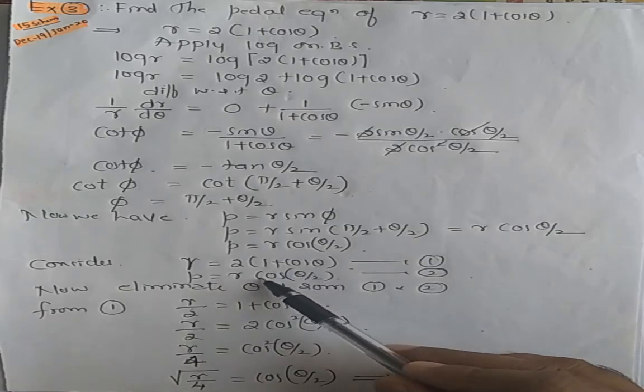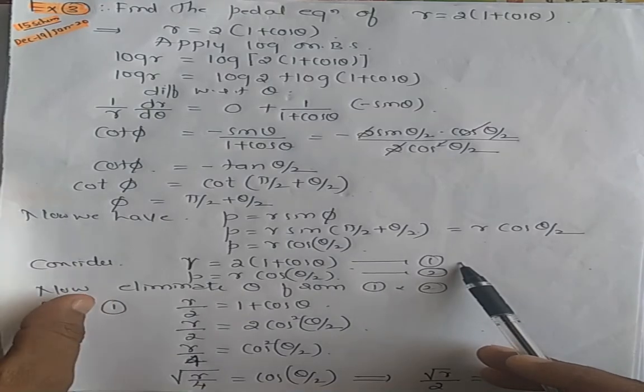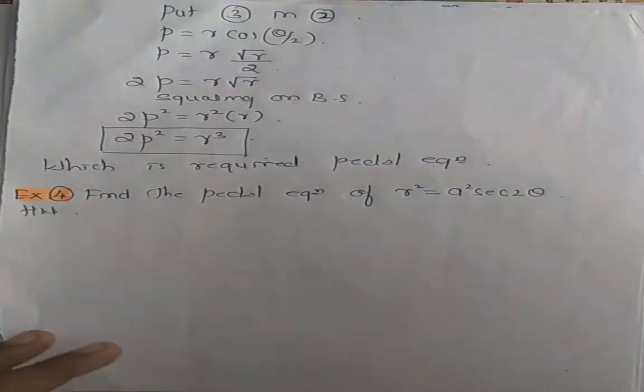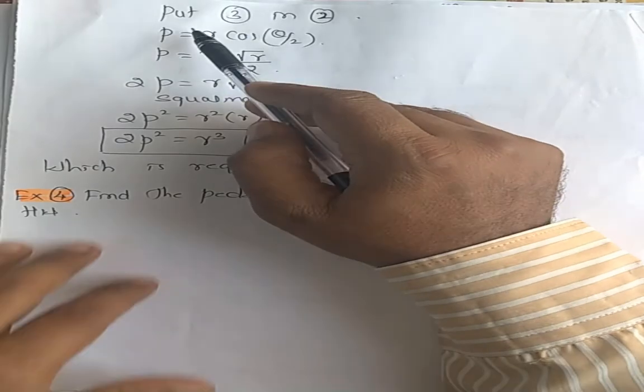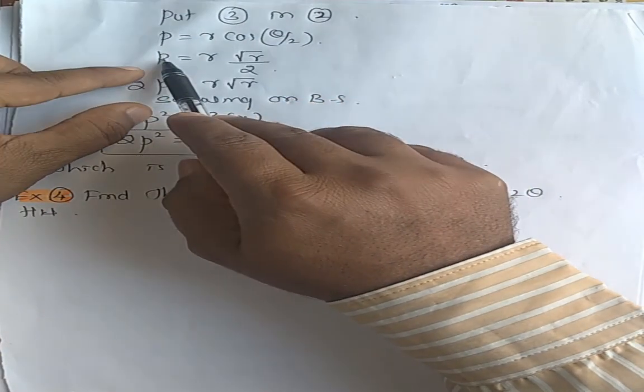Put this equation 3, cos theta by 2 value, equation 3 in equation 2. Substitute the value, replace this by root of r by 2. So after substituting, you will get this. Putting 3 in 2, this is equation 2, p equals r cos theta by 2, so p equals, the 2s cancel, and you get the final result.